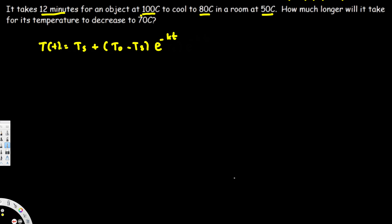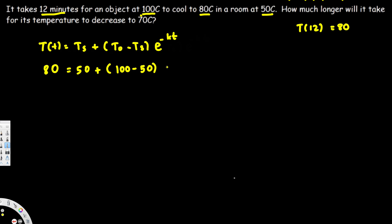To find k, we plug in all the values. T(12) = 80 degrees Celsius, so we write: 80 = 50 + (100 - 50) * e^(-12k). Temperature at time is 80, surrounding temperature is 50, initial object temperature is 100, and the time is 12 minutes.